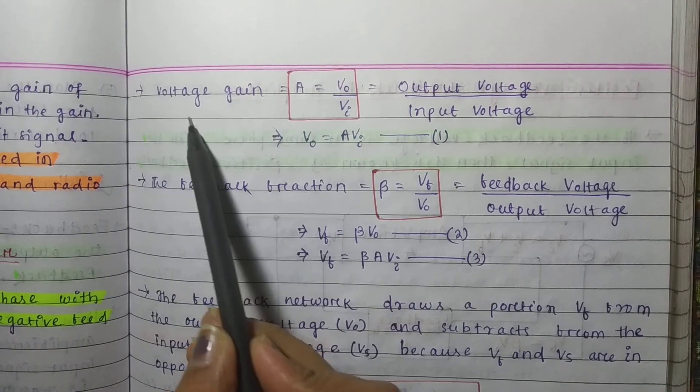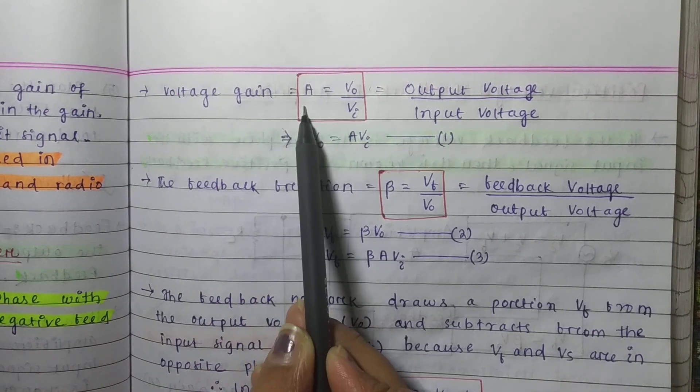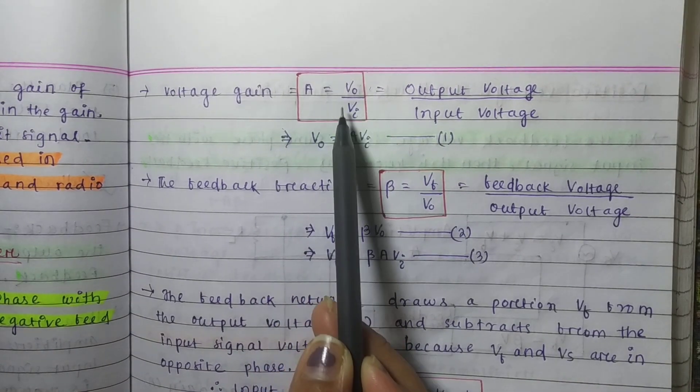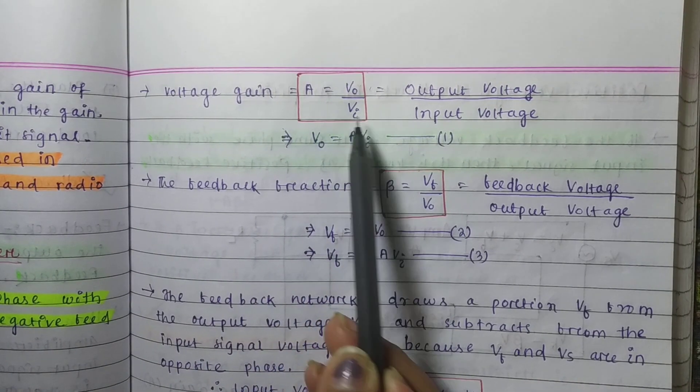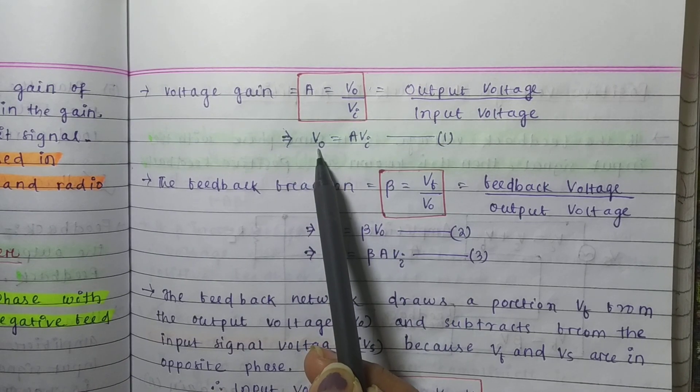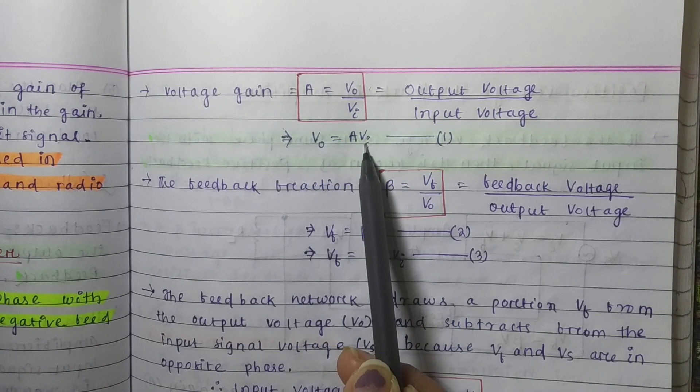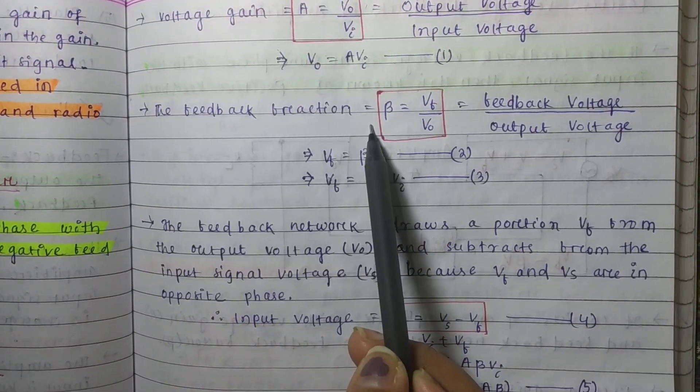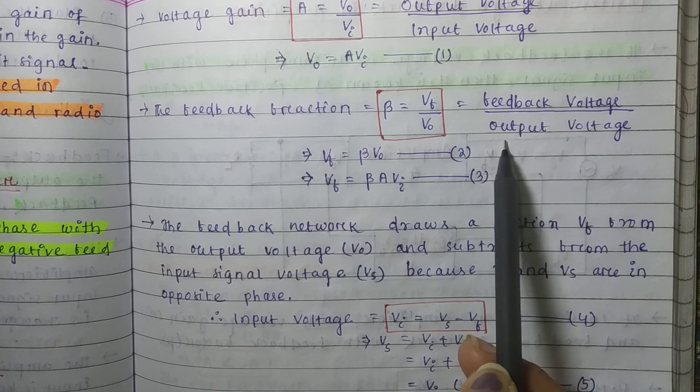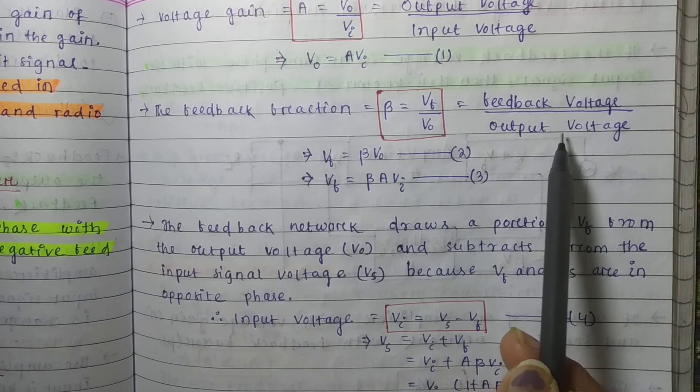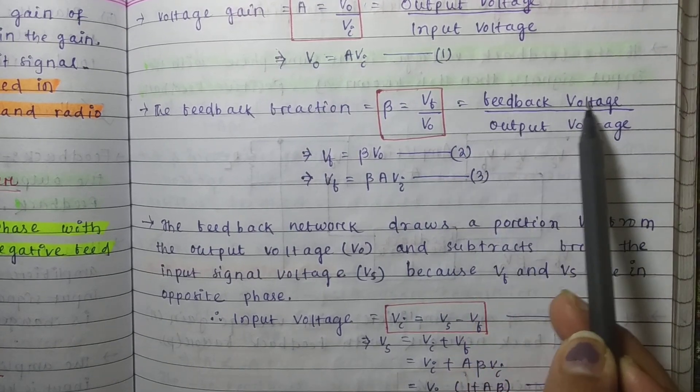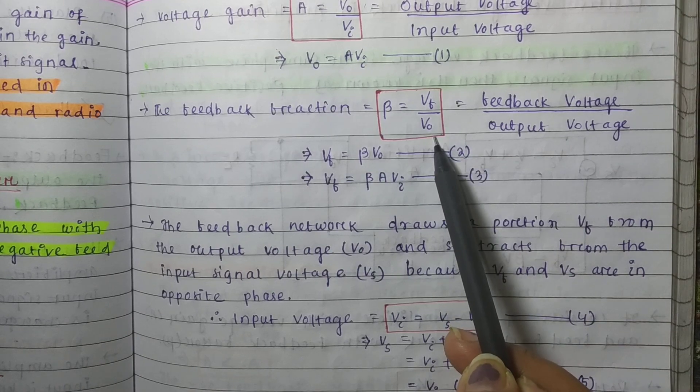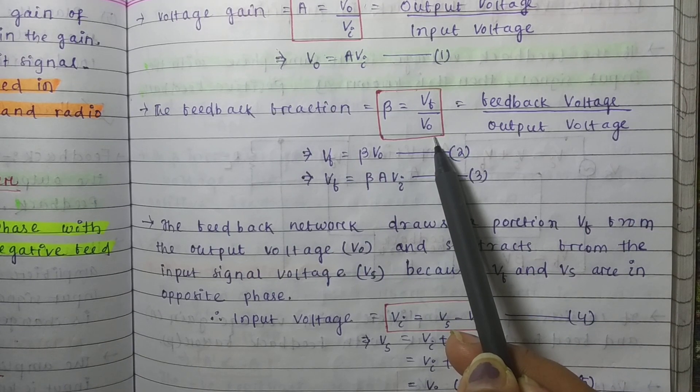What is the voltage gain? We know voltage gain equals output voltage by input voltage, so V output equals A times V input. The feedback fraction beta is also given by feedback voltage by output voltage. Feedback voltage is Vf, output voltage is Vo.